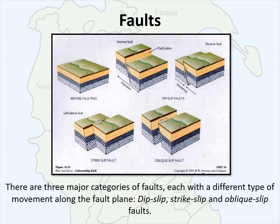There are three major categories of faults, each with a different type of movement along the fault plane. There are dip slip faults, which are further categorized as normal and reverse. Strike slip faults, which are further categorized as left lateral and right lateral. And oblique slip faults. For the purposes of this class, we're just going to go over dip slip faults and strike slip faults.